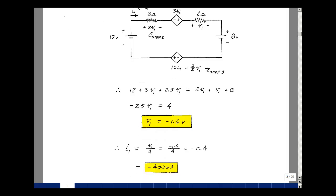Now I found that the current I1 was V1 over 4, and V1 is 1.6 volts. And so I'll divide that by 4, I get a minus 0.4.